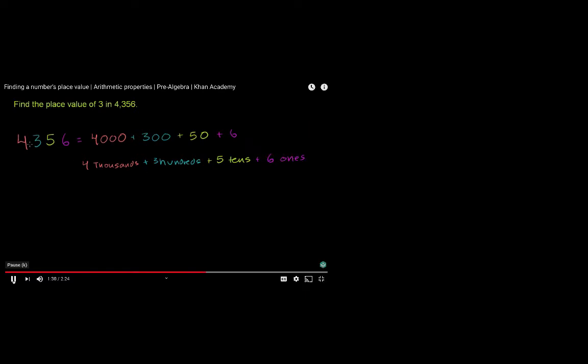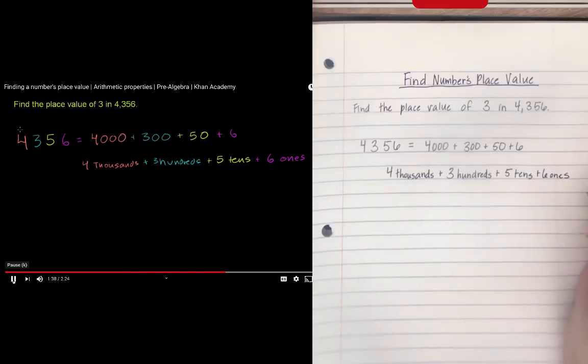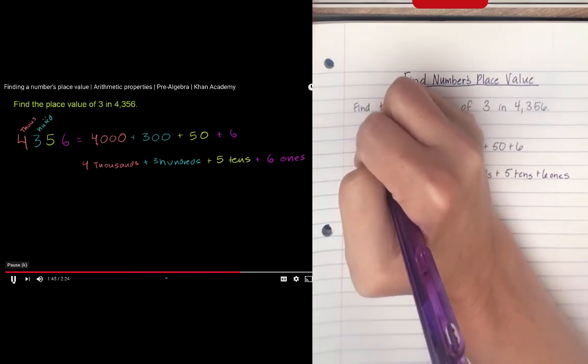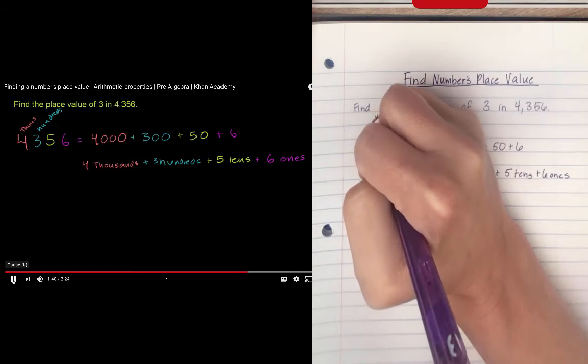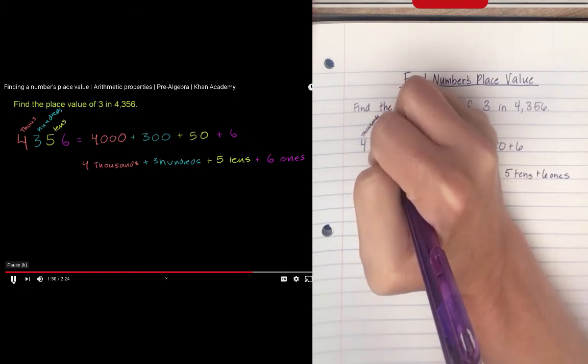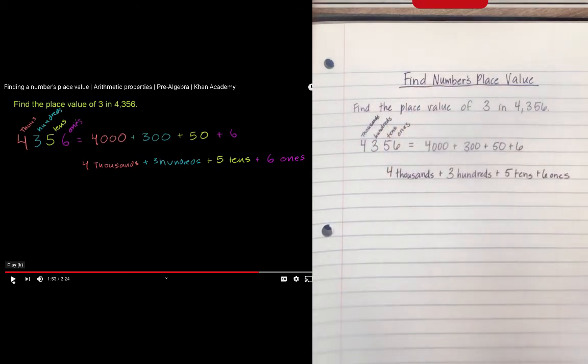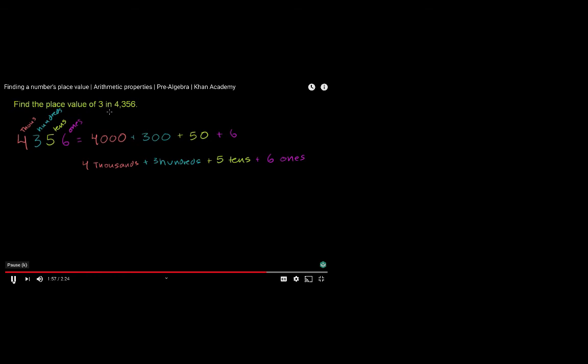So if we go back to the original number 4,356, this is the same thing as 4 thousands, 3 hundreds, 5 tens, and then 6 ones. So again, I wrote down thousands, hundreds, tens, ones right above each of those numbers in their place value. So when they ask what is the place value of 3 in 4,356, we're concerned with this 3 right here and its place value. It's in the hundreds place.